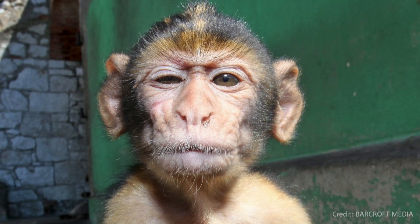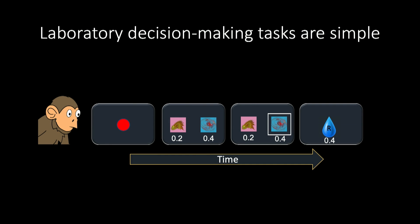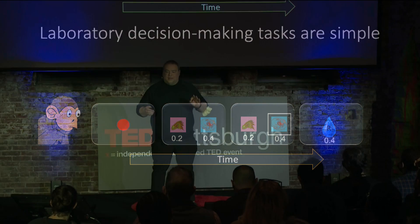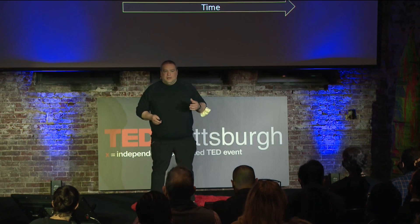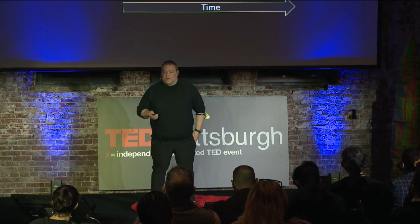We use these animals because they're cognitively sophisticated, but it's still very hard to make a monkey concentrate. As a consequence, the decision-making tasks are very simple. Here's an example we commonly use: the animal looks at a computer screen, a red dot appears to start the trial, then two icons appear that predict different rewards — large or small.